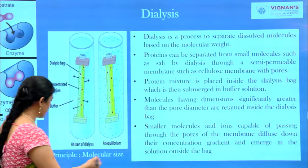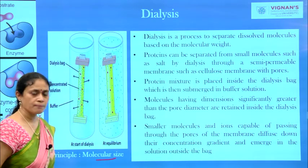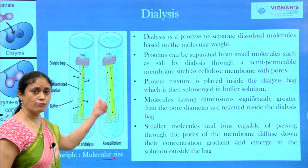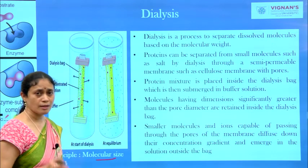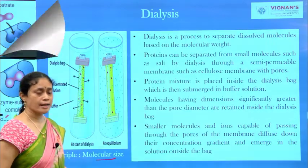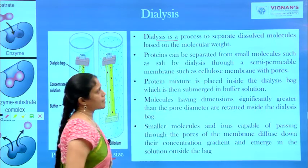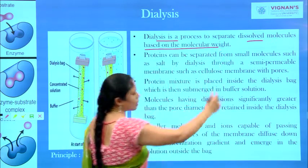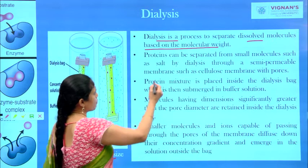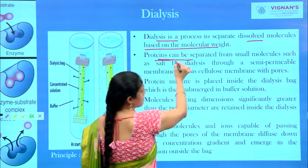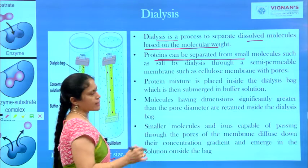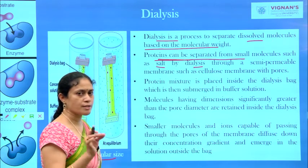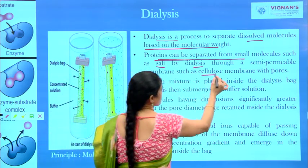What is the principle involved in this particular technique? The separation is based upon molecular size. Dialysis is a process to separate dissolved molecules based upon the molecular weight. Proteins can be separated from small molecules such as salts by using dialysis through a semi-permeable membrane, which is mostly made up of cellulose.